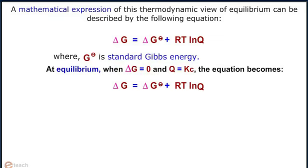When delta G equals zero and Q equals Kc, the equation becomes delta G equals delta G° plus RT ln K, which equals zero.